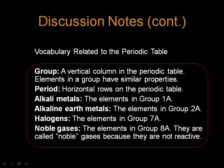Alkali metals are the ones in the first group, group 1A. Alkaline earth metals are the ones next to that in group 2A. Halogens are in group 7A, which is almost all the way to the right. And the noble gases are on the very far right of the periodic table. They're called noble because they are not reactive.